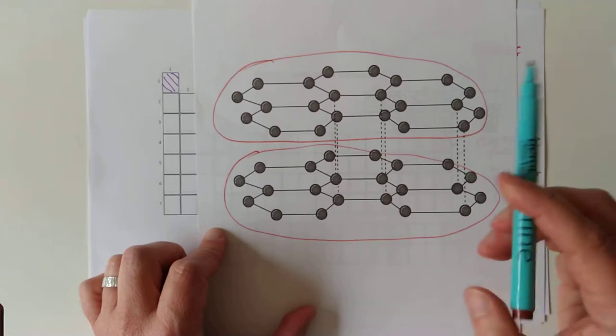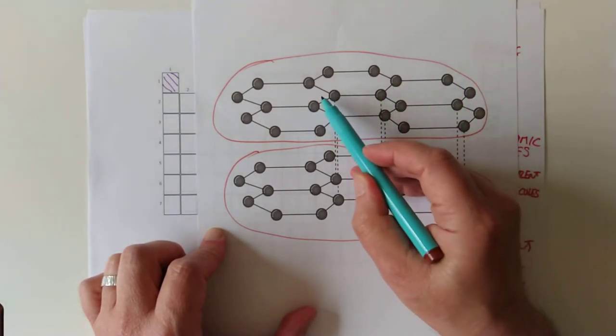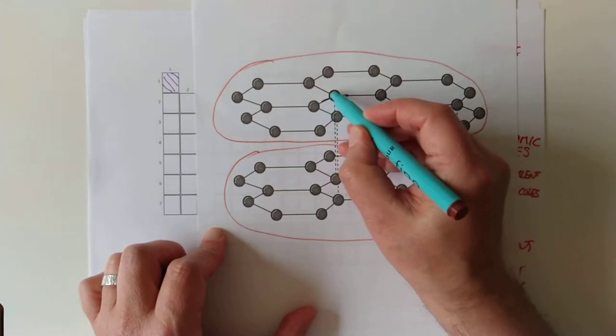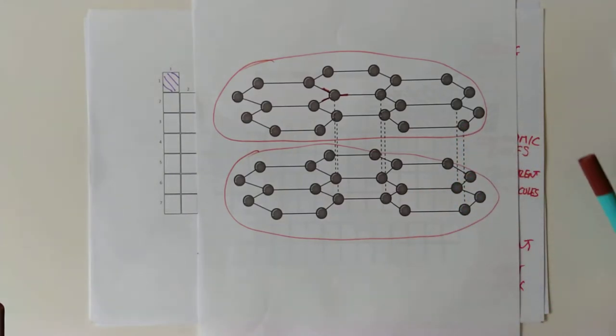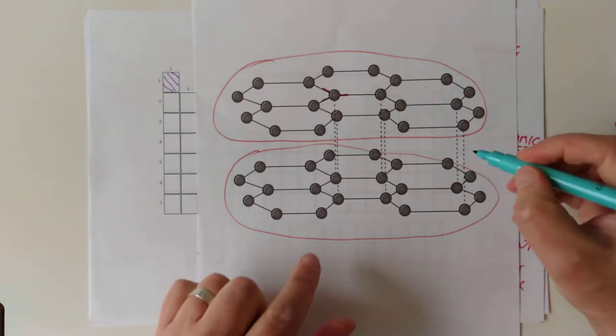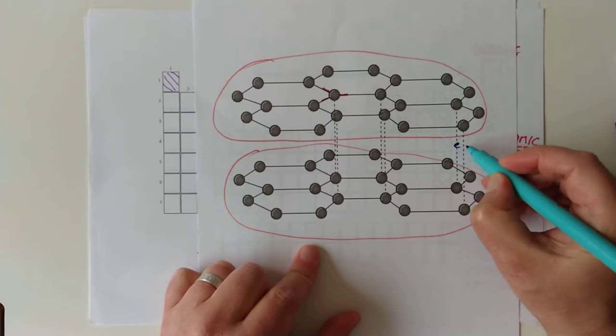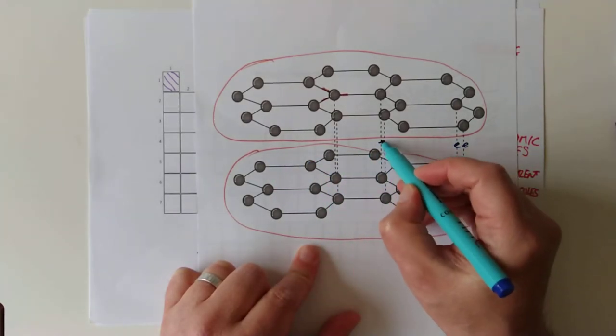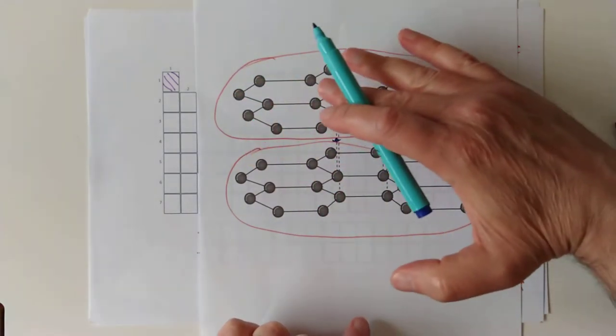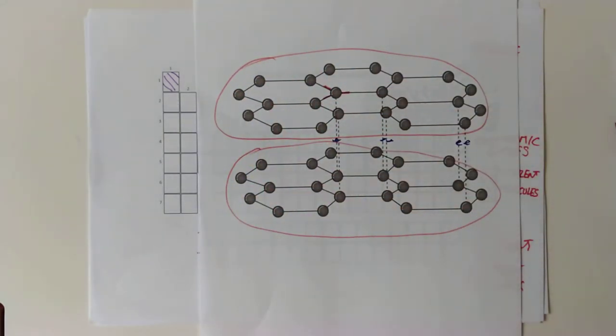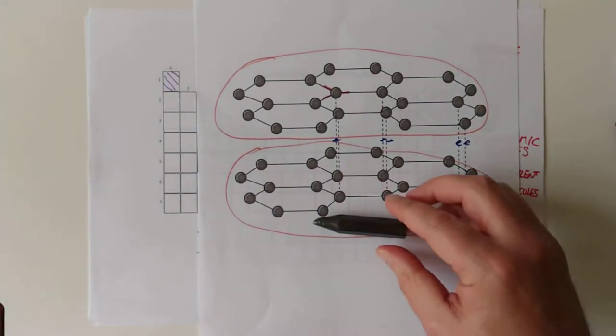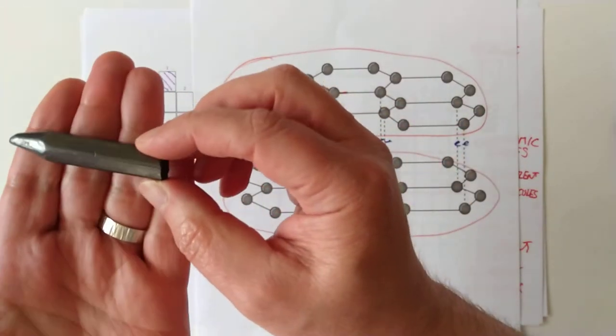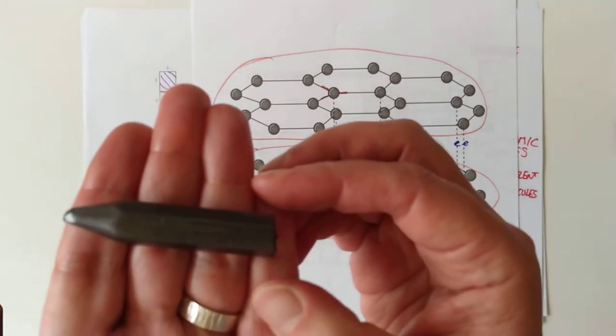But if you look carefully, never mind the perimeter ones, look at the carbons in the center, they've only got three bonds to them. That's not right, carbon is supposed to have four bonds. What's happened to the fourth electron? Well the fourth electron has actually become delocalized, and that's what these little bonds here are. The delocalized electrons exist in a sort of middle layer between these hexagons and it holds one layer of hexagons to the underlying layer of hexagons with surprisingly weak forces. In fact, if I can get one just for a second.